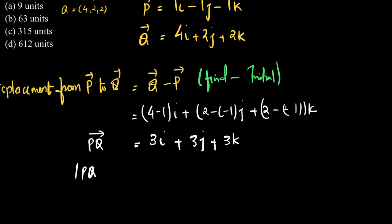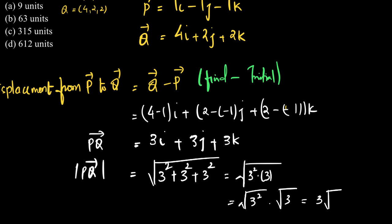So magnitude of displacement vector here is magnitude of PQ, which is equal to √(3² + 3² + 3²), which is equal to √(9 × 3), which is equal to √(3²) × √3, which equals 3√3.